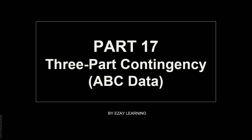Each of these letters stands for something. The A stands for antecedent, B for behavior, and C for consequence. You need to just remember what each of these stand for — antecedent, behavior, consequence — and now let's cover each of these.